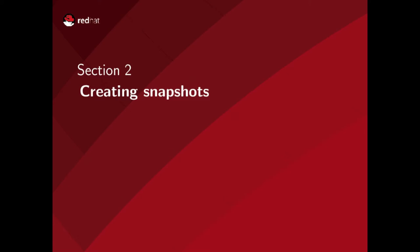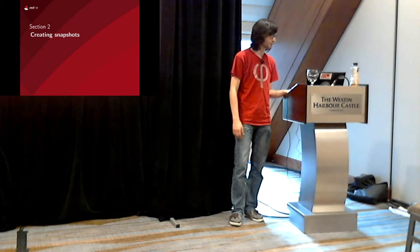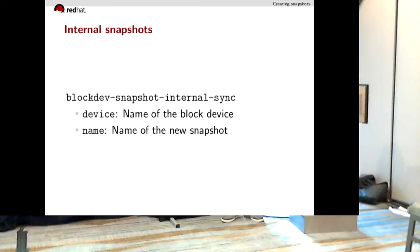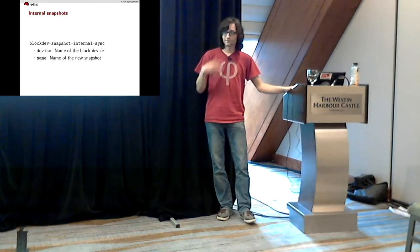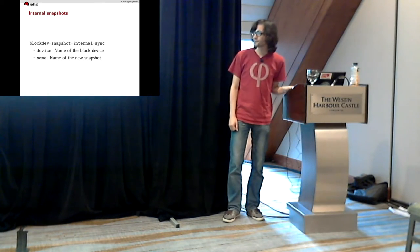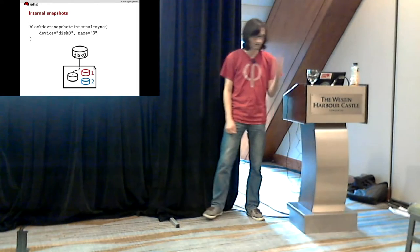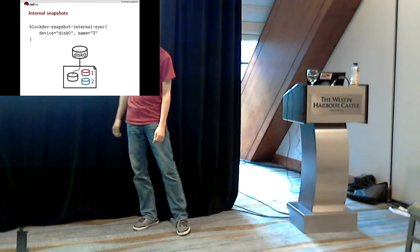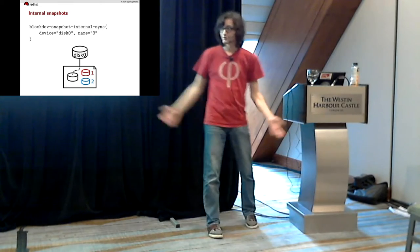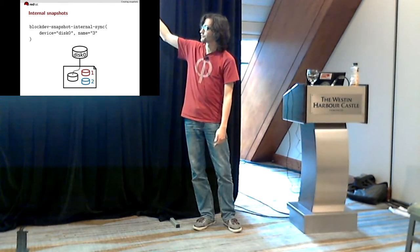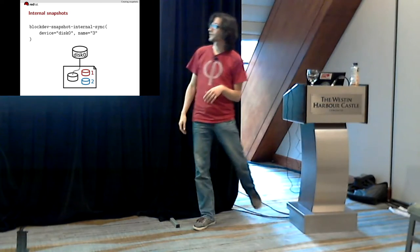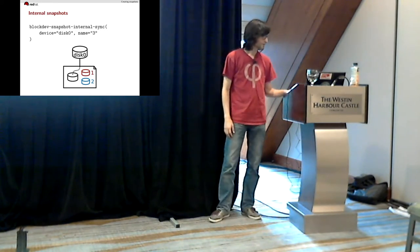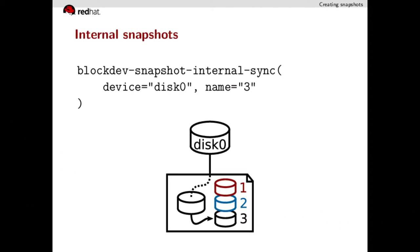Now let's come to the interesting part — how can you use QMP to actually create snapshots on a virtual machine while it is running? For internal snapshots, there's the `block-snapshot-internal-sync` command, which takes two parameters: the name of the block device to which the disk image is attached, and the name you want to give to the new snapshot. So if you have a guest drive with two existing internal snapshots called "one" and "two" and want to create a third called "three", you execute the command with `device=disk0` and the new name.